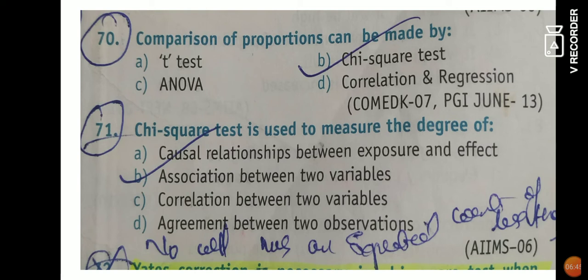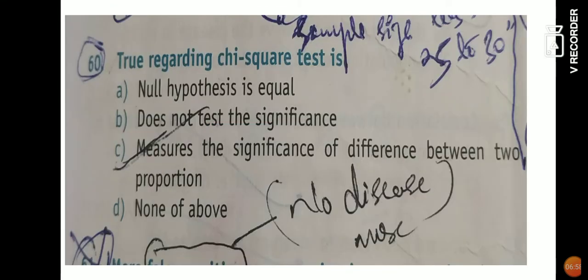In question 60, regarding chi-square test: 'Is the null hypothesis equal?' — No, in chi-square test it is never equal; there will always be comparison between two things. 'Does it not test significance?' — We know chi-square test is used for testing the significance of proportion, association, or goodness of fit. So option C is the most appropriate answer: chi-square test measures the significance of difference between two proportions.